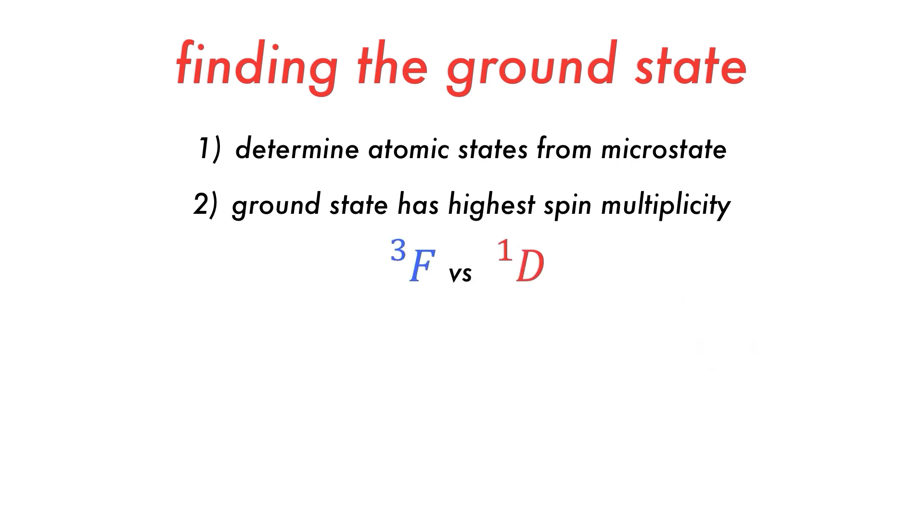So, in the case of triplet F versus singlet D, triplet F would be considered the ground state. But what if there are two atomic states with the same multiplicity? In this case, the one with the higher L value becomes the ground state